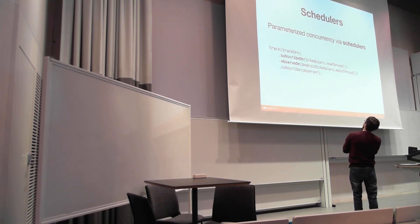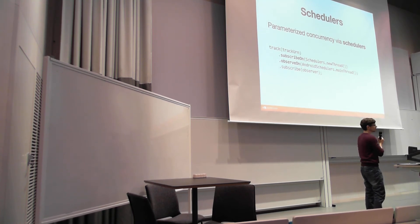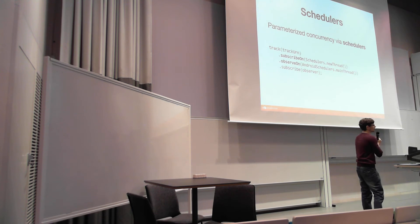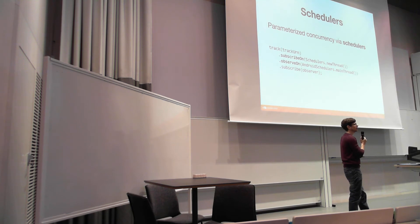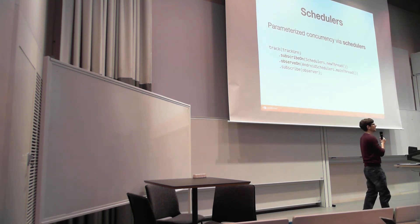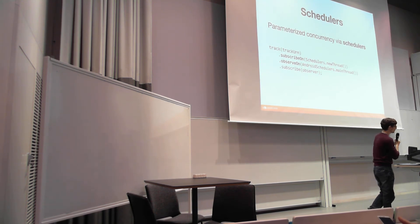RxJava expresses this using the same concepts — it's just an operator: subscribeOn and observeOn. They work in much the same way as map or flatMap. You just pass it a scheduler and it does the rest. This is also nice for testing, because you can take the exact same function and in the unit test use the immediate scheduler or no scheduler at all, and it would just run synchronously. Since concurrency is parameterized, you can just omit it in unit tests — you don't have to do Robolectric-style hacks to replace async tasks and cut out concurrency.